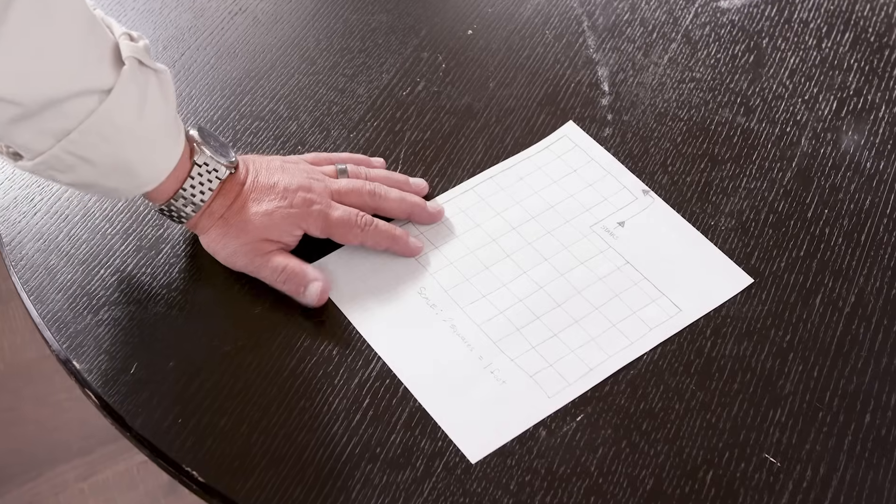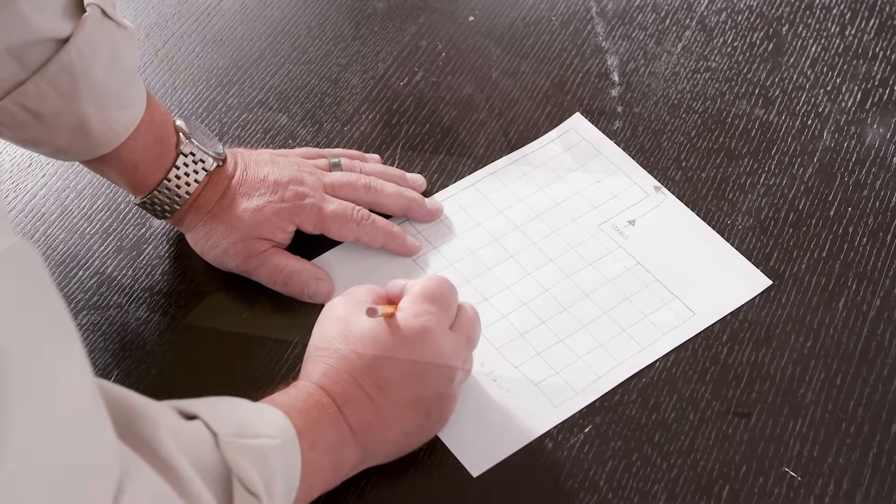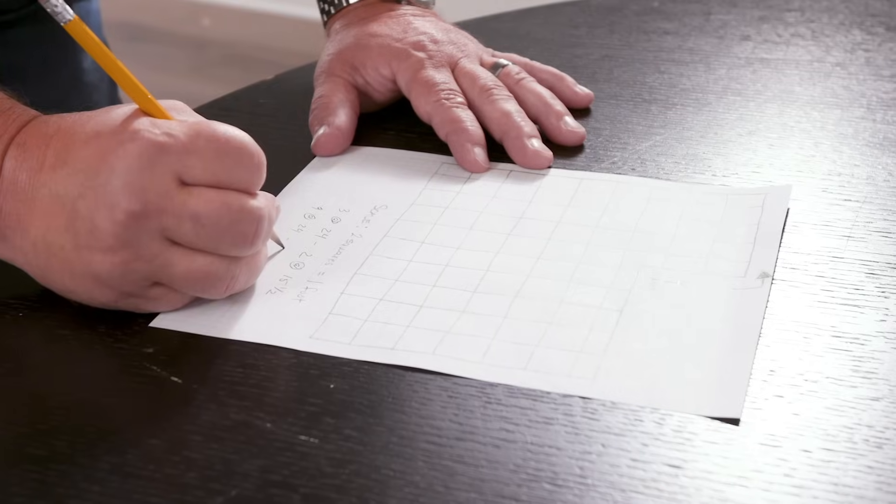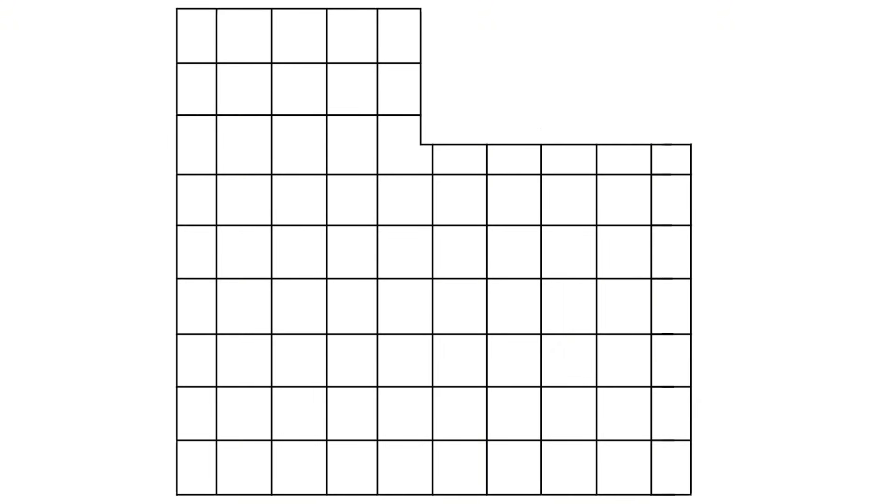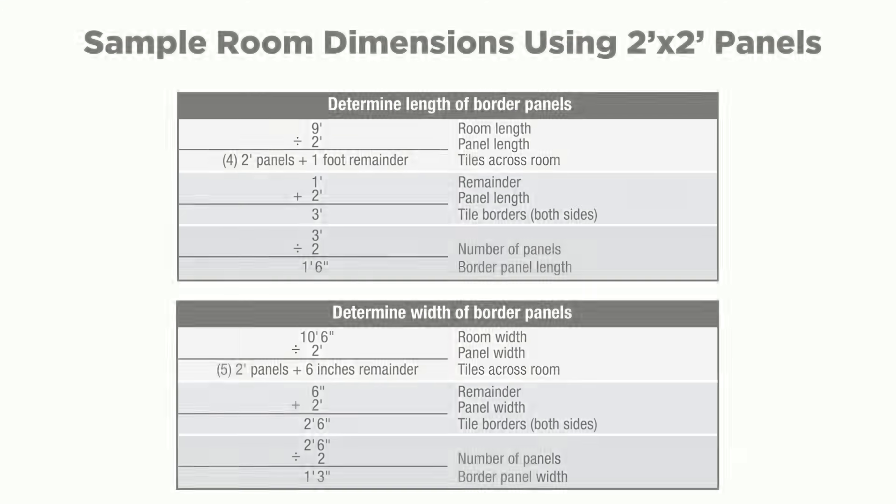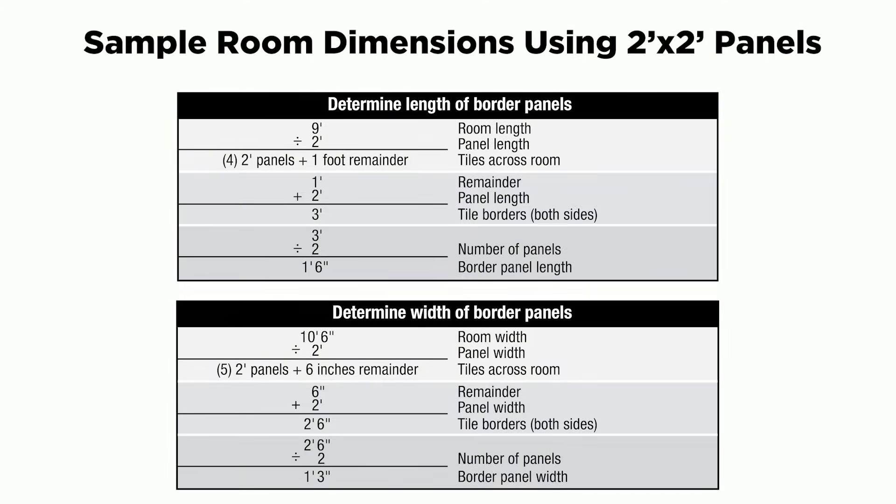Planning your layout: We recommend creating a layout of your ceiling before beginning your project. Visit the Drop Ceiling Calculator on our website for additional guidance. For the best appearance, border panels should be the same size on opposite sides of the room and as large as possible. Use your room dimension and the following formulas to plan your space. Pause the video here to review the worksheets.